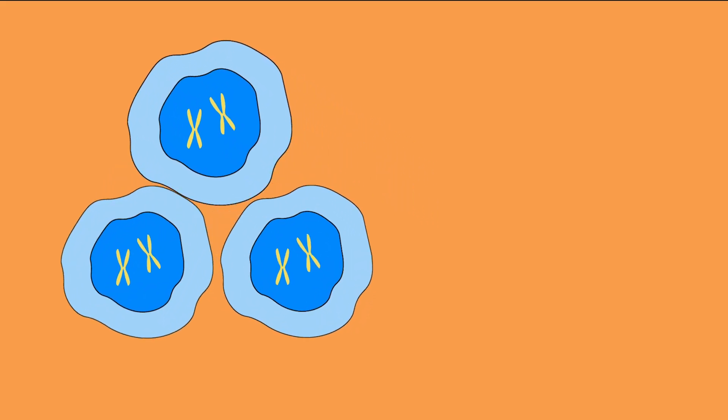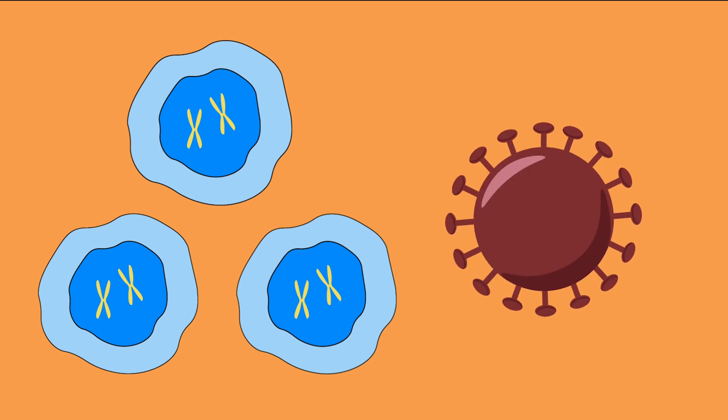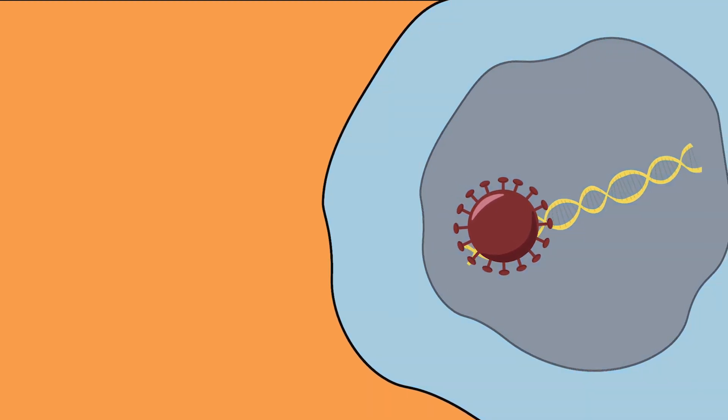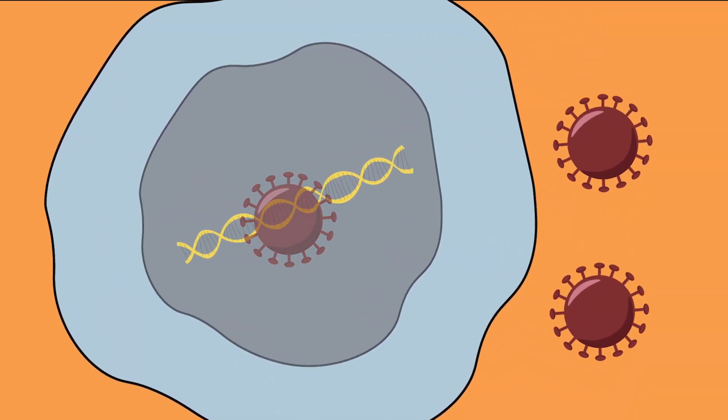Unlike most other biological agents, viruses can't reproduce on their own. Instead, they infect a host cell, hijack the cell's machinery, and force it to produce new viruses.